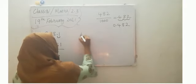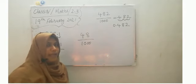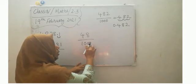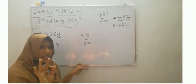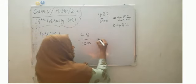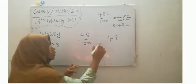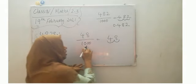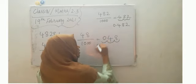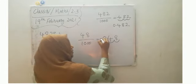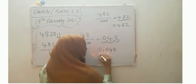Then check another example: forty-eight by thousand. We have three zeros, so we have to put three places. After three places, we should mark the decimal point. But we only have two numbers, that is two positions — one and two. We should move one more time, so here we have no digit, so put zero. After that, put the decimal point. So we can write it as zero point zero four eight.